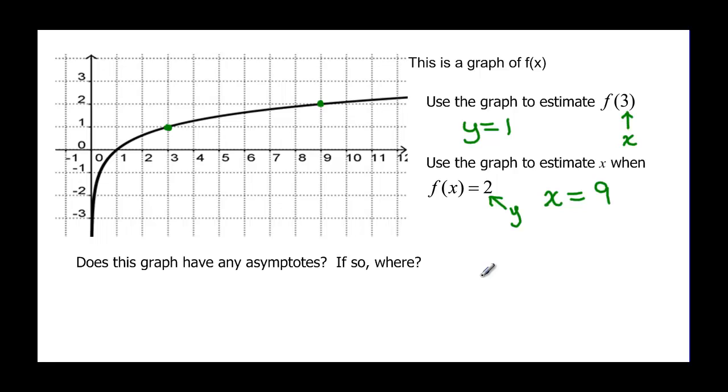And it asks us does this graph have any asymptotes? Well this graph is getting real close to this y axis. And in fact because of how thick our line is it looks like it might be crossing the y axis or at least becoming the y axis. But it isn't actually. So our y axis is actually an asymptote here. And that's a vertical line so it would be x equal zero.